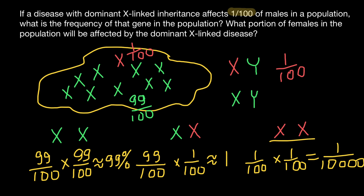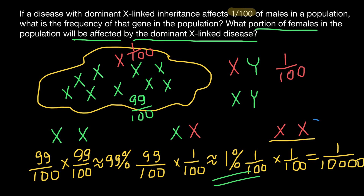So heterozygous females account for approximately one percent, and those homozygous for this dominant disorder are a negligibly small number. The sum of heterozygous and homozygous-affected females makes roughly one percent, and this is our answer: about one percent of females in the population will be affected by the dominant X-linked disease. This is a rough estimation — an approximation — so one percent is a very good answer.